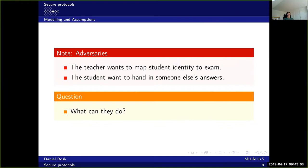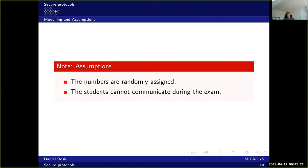The question is: what can these adversaries do? We need to know the limits of their powers to reason about the security of this protocol. One assumption is that numbers are randomly assigned — if they were given in alphabetical order, the teacher could easily de-anonymize students. Another assumption is that students cannot communicate during the exam, because if they could, they could trade answers and the protocol would break down.